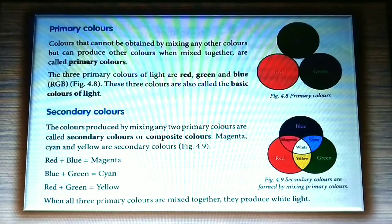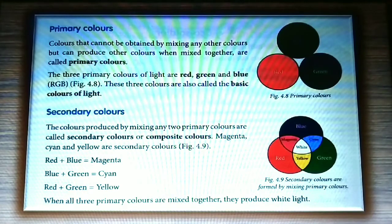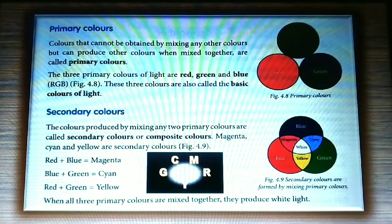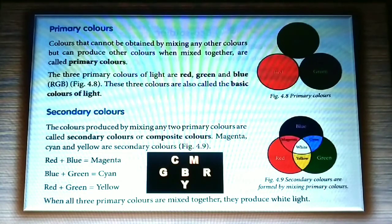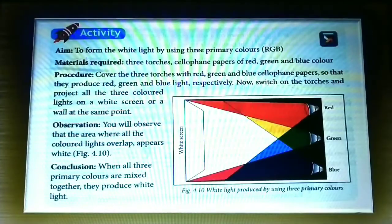Secondary colors: the colors produced by mixing any two primary colors are called secondary colors or composite colors. Magenta, cyan, and yellow are secondary colors. From our mnemonic: red plus blue gives magenta; blue plus green gives cyan; and red plus green gives yellow. When all three primary colors are mixed together, they produce white light.